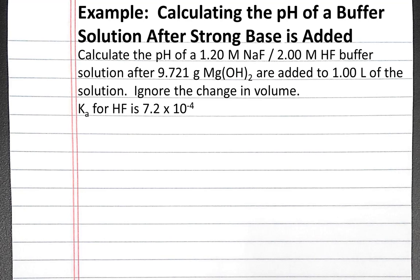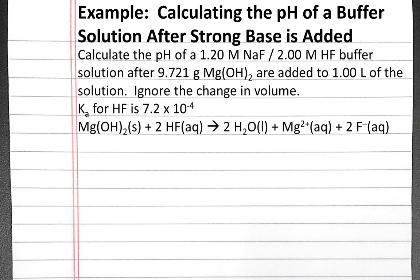The first thing we need to do to solve this problem is to write the balanced chemical equation for the reaction. Our magnesium hydroxide will combine with the hydrofluoric acid to produce water and magnesium fluoride ions.